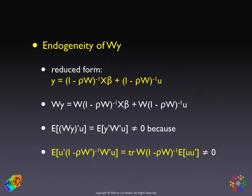As we've already encountered in the discussion of the spatial lag model in the maximum likelihood context, the spatial lag term on the right-hand side is actually endogenous and creates a simultaneous equation bias. We can see this clearly when we spell out the reduced form for the spatial lag model, where we first move the Wy term to the left-hand side and then pre-multiply everything by the matrix (I minus rho W) inverse. This gives us the reduced form with two terms on the right-hand side: the first is (I minus rho W) inverse times X beta, and the second is (I minus rho W) inverse times the vector of errors.